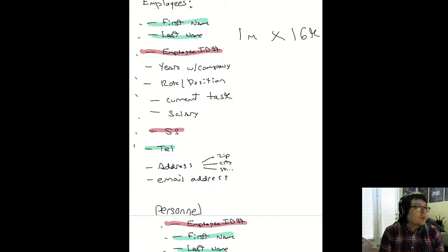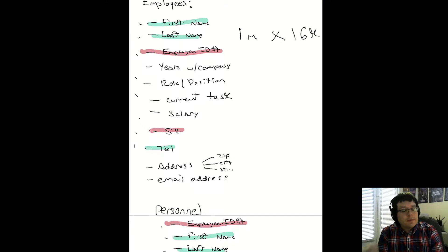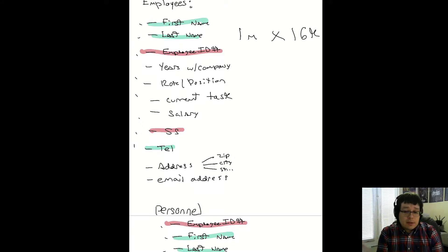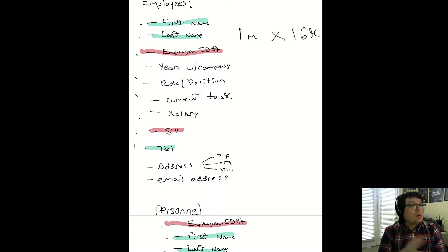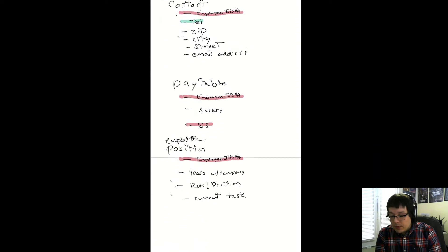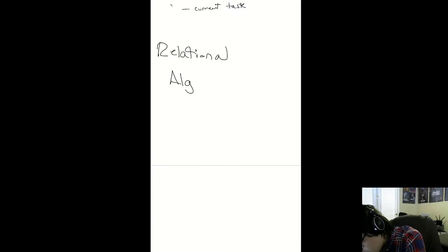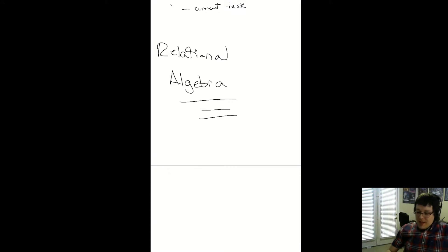This process of taking data and splitting it into tables is not trivial for real cases — you have hundreds of columns to work with. It takes years for a proper company to develop a good database. Now let's talk about the query language. Relational algebra is the mathematical basis — it was created to be mathematically sound, which is what makes it fast. I'll write that down in case you want to Google it later.